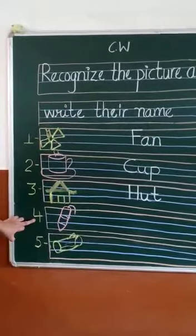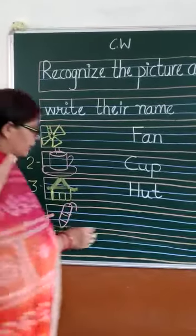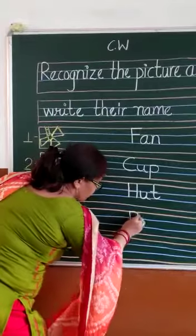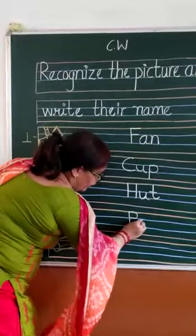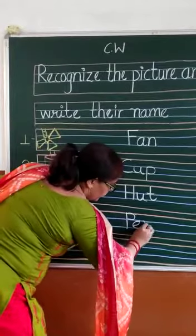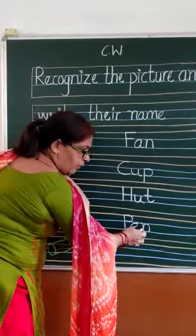Next, number four. Which picture? This is a pen. P, E, N, pen. P, E, N, pen. Okay?